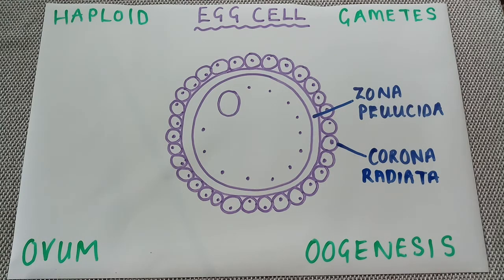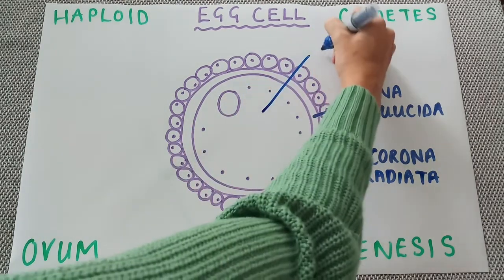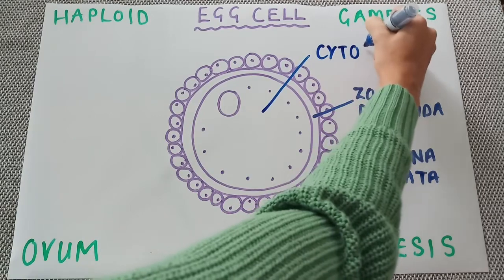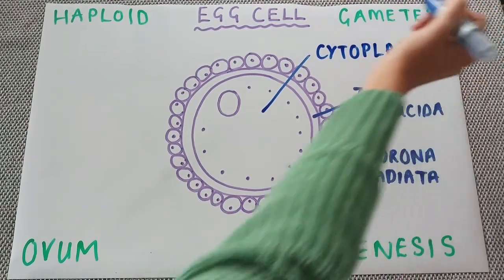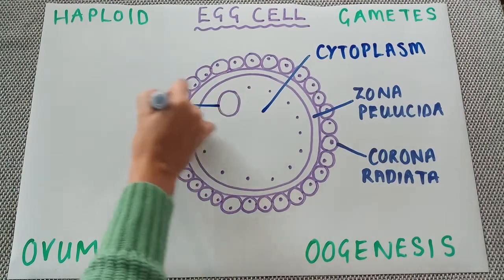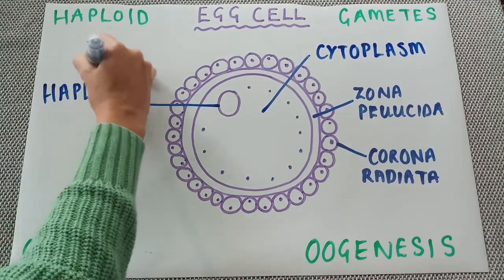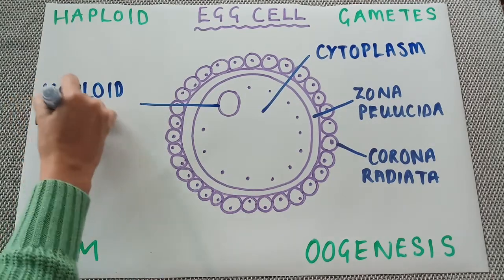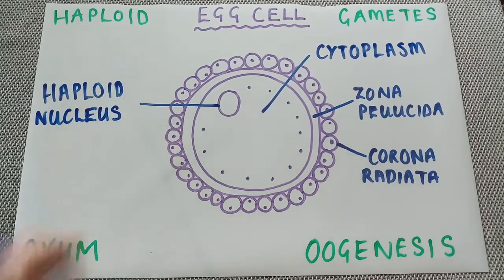Inside the egg cell we have the cytoplasm, which is the same as in all other body cells. We also have a haploid nucleus — that is 23 single chromosomes in a human. Specifically with the egg cell, this contains all of the maternal DNA: everything coming from the mother that will be given to the zygote.